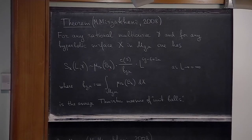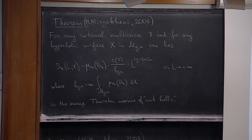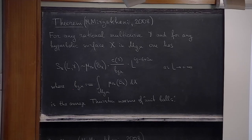The coefficient is Thurston's measure of the unit ball measured in terms of the hyperbolic metric X, times a coefficient which depends only on gamma, divided by a coefficient which is the average measure of unit balls with respect to all hyperbolic metrics in M_{g,n}. The only dependence on the hyperbolic metric is hidden in Thurston's measure of the unit ball. The dependence on topological type of gamma — whether we choose separating or non-separating simple closed geodesics — is hidden in this coefficient, which is also the measure of each volume of the principal stratum of meromorphic quadratic differentials on surfaces of genus g with n poles.